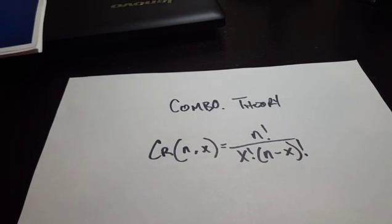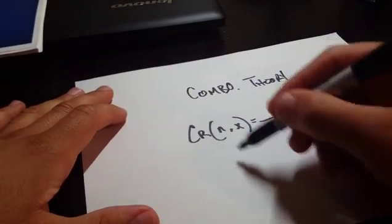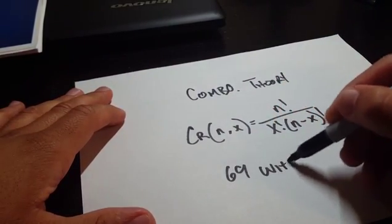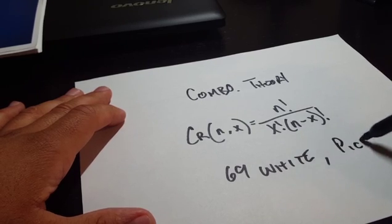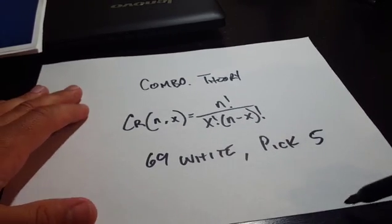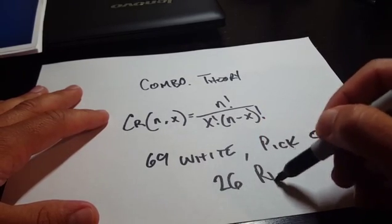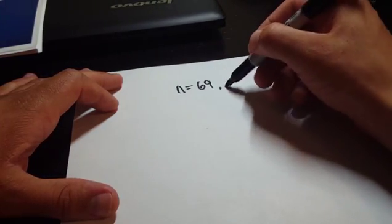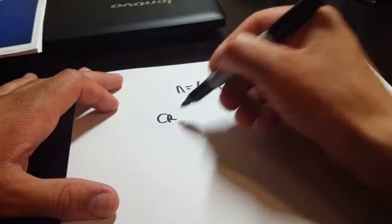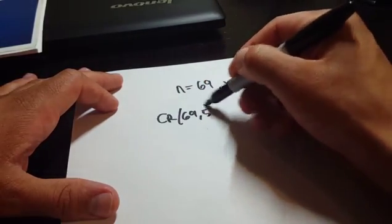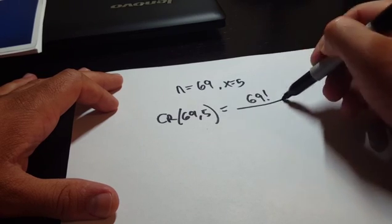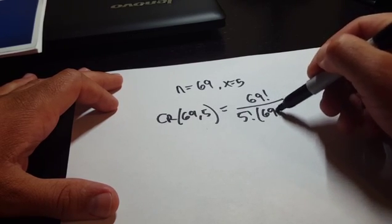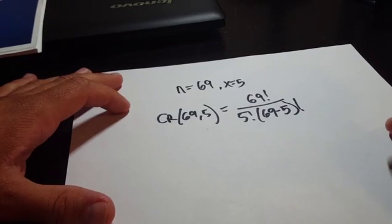With Powerball, we have 69 white balls and we pick 5. Then with the Powerball number, there are 26 red balls and you have to get that ball right. Using the combination equation for the white balls, n = 69 and x = 5, so we have C(69, 5).